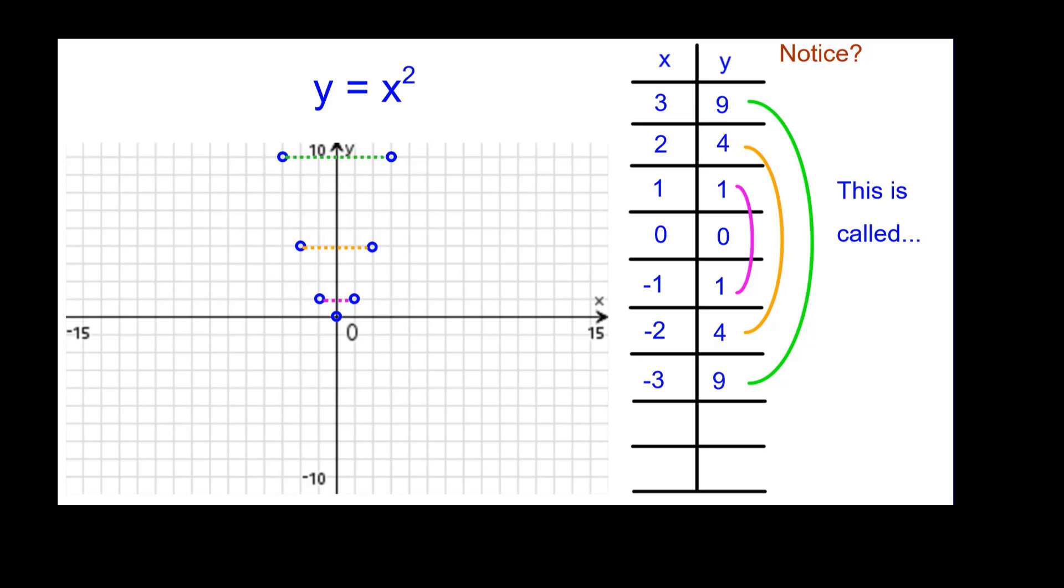This is called, wait for it, symmetry in the table and in the graph. There's symmetry about the y-axis where the line x equals 0.